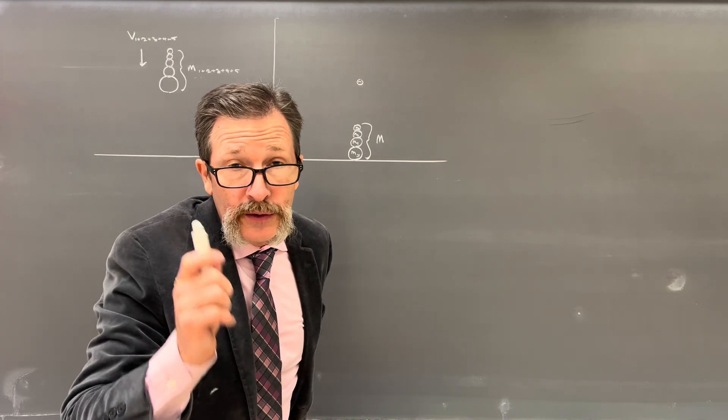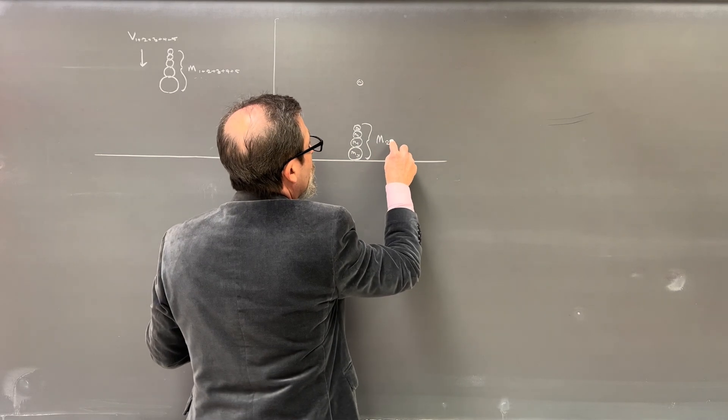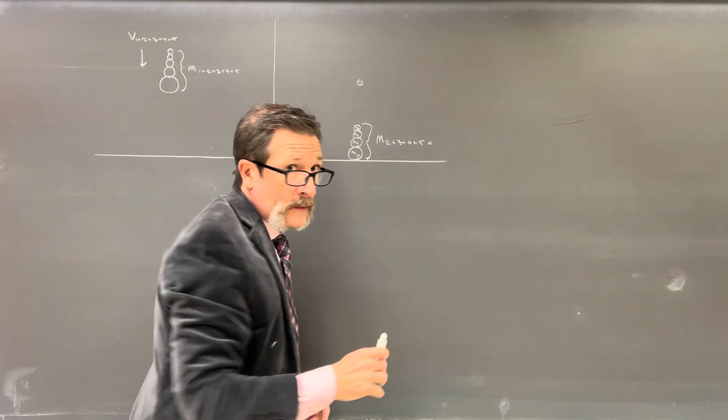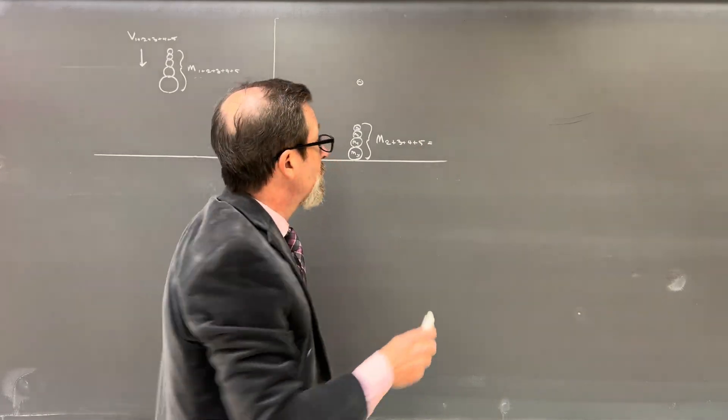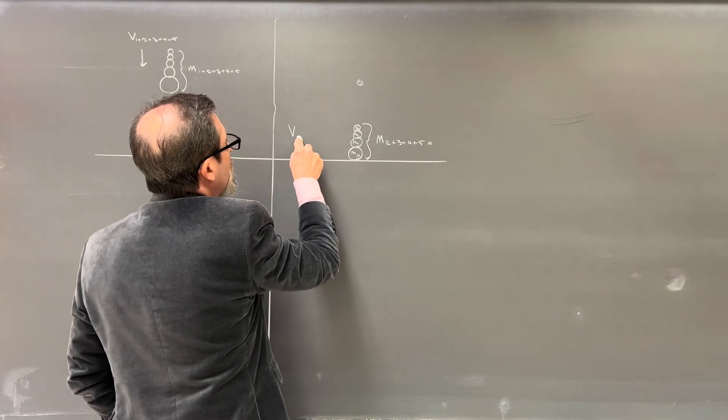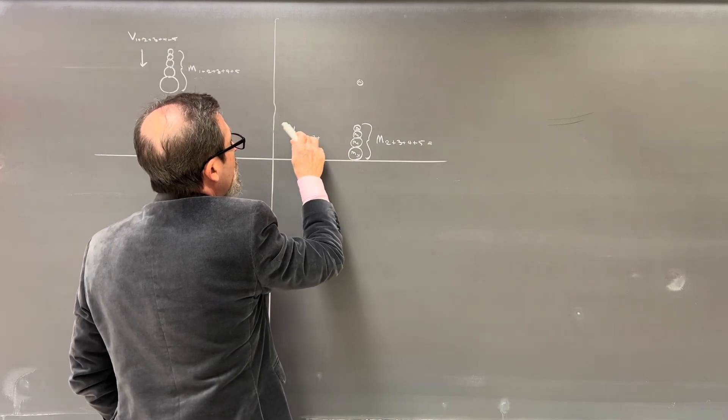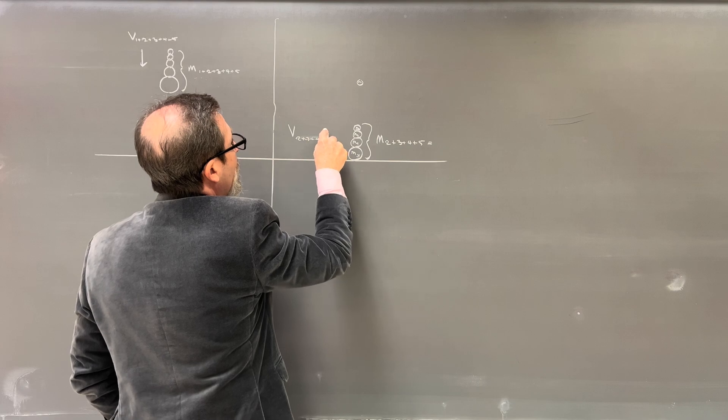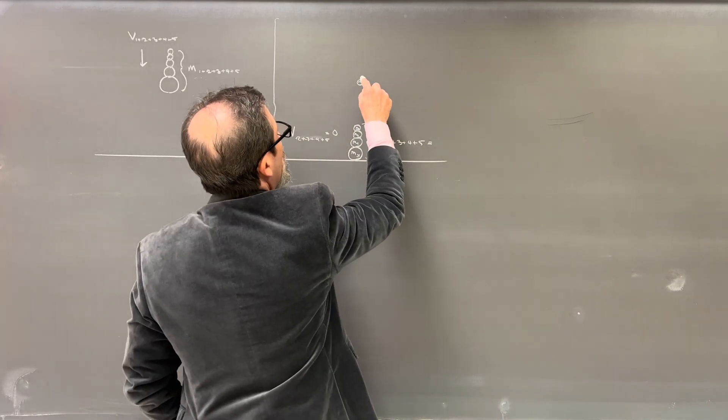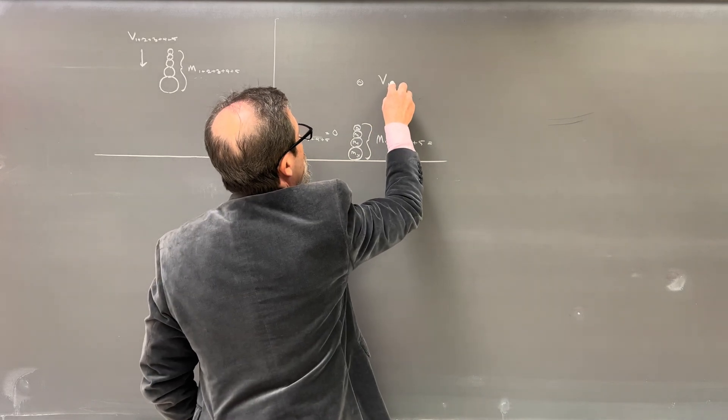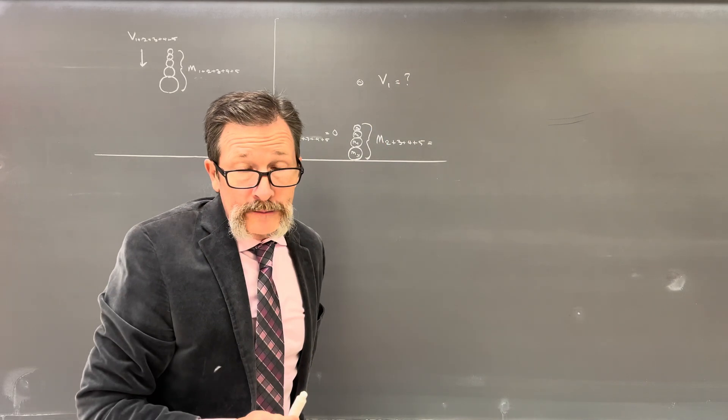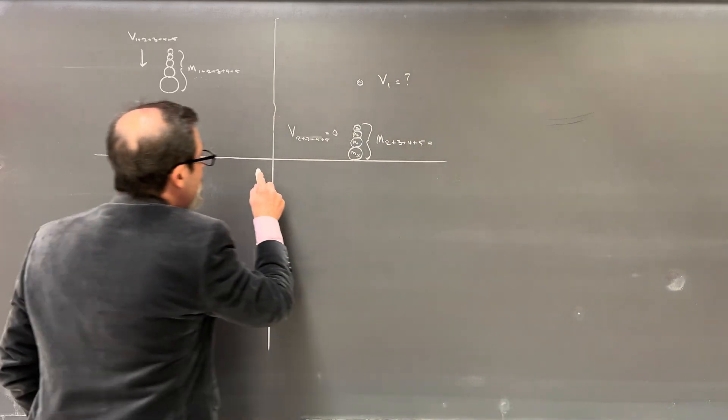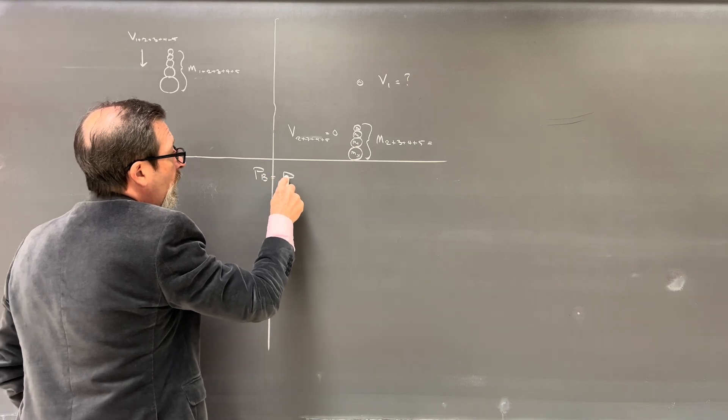This will be mass 2, 3, 4, and 5. But remember, they're going to end up stopping. So the velocity down here, the velocity of 1 plus 2 plus 3 plus, I'm sorry, these would be 2 plus 3 plus 4 plus 5. That equals 0. We need to know for mass number 1 here, what is the velocity of mass number 1?